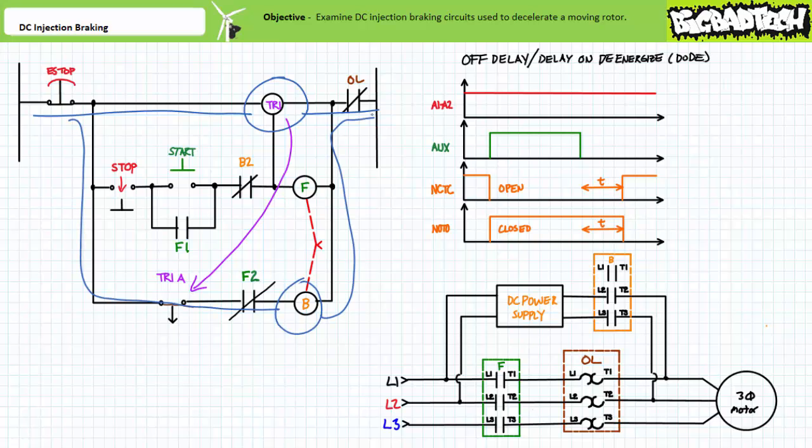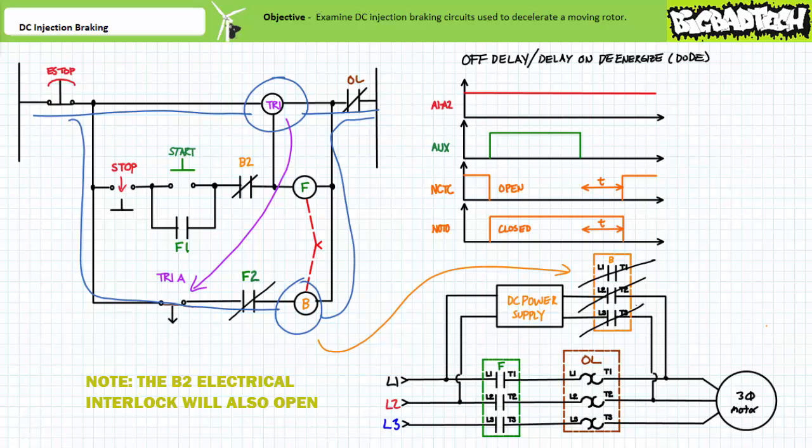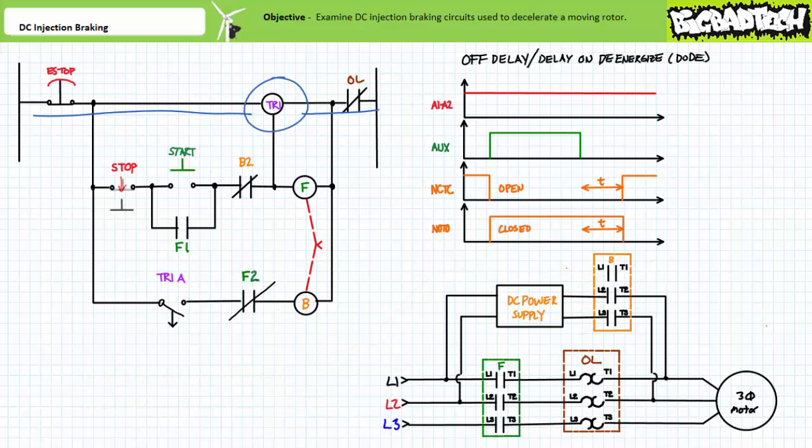The TR1A contact remains closed for an additional two-second delay. This energizes the B contactor coil and its associated contacts immediately change states. The B primary contacts close and fixed DC is applied to the motor. The rotor rapidly decelerates. After a two-second off delay, normally open time open contact TR1A opens and de-energizes the B contactor coil. The B primary contacts open.